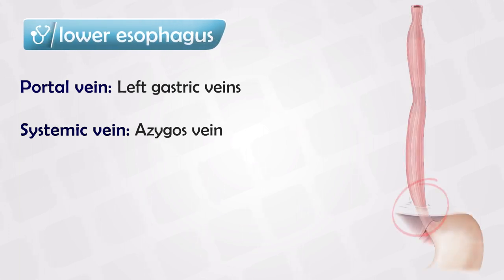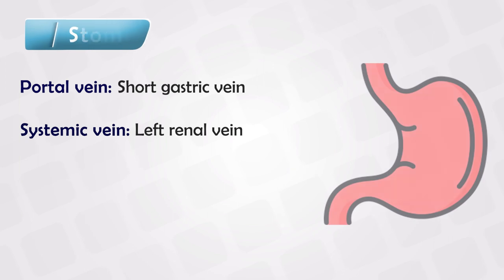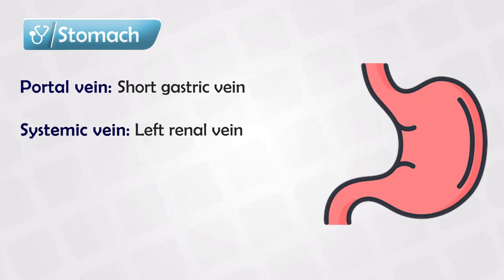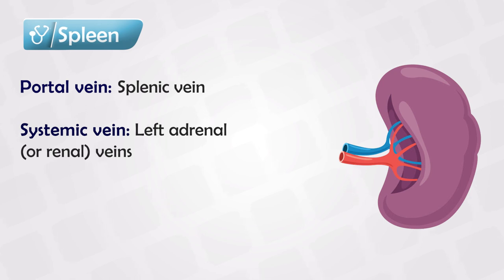The first area is the lower esophagus, where the left gastric veins connect with the azygous veins. Next is in the stomach, where the short gastric veins connect to the left renal. Next is the splenic vein, where it connects with the left adrenal or sometimes the left renal.